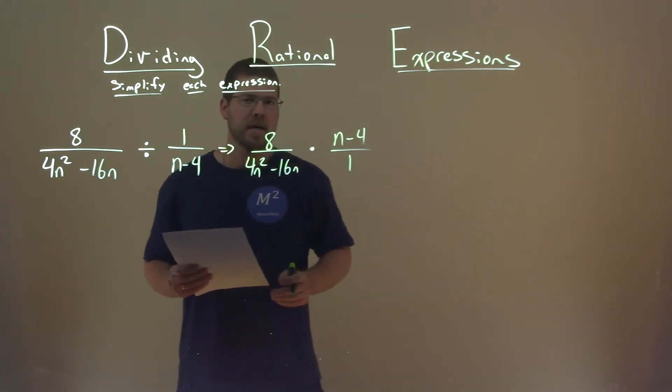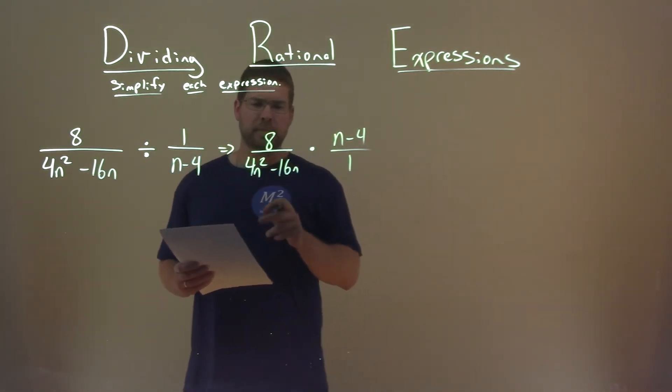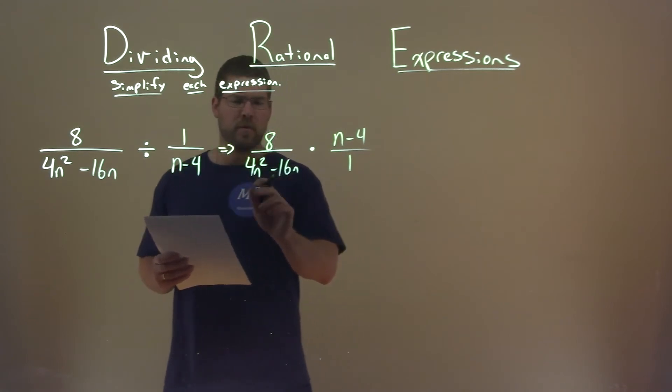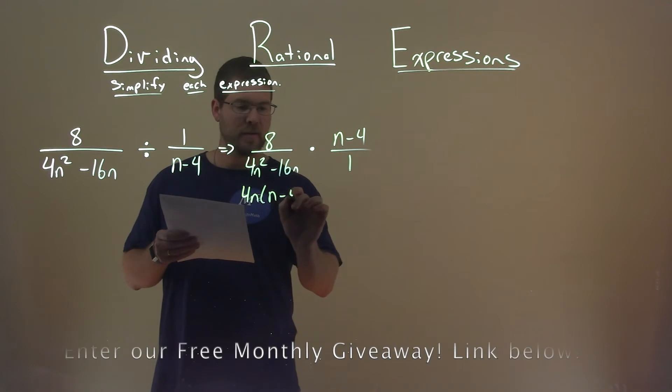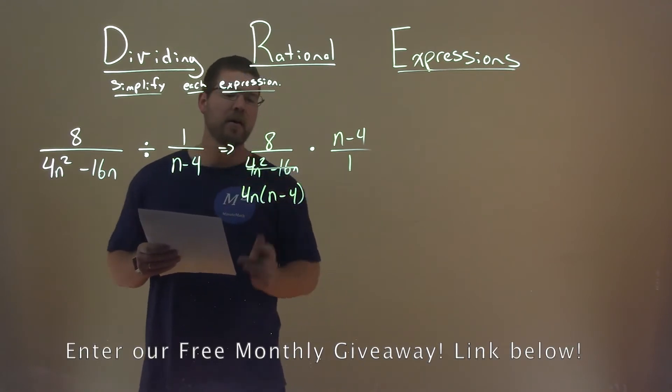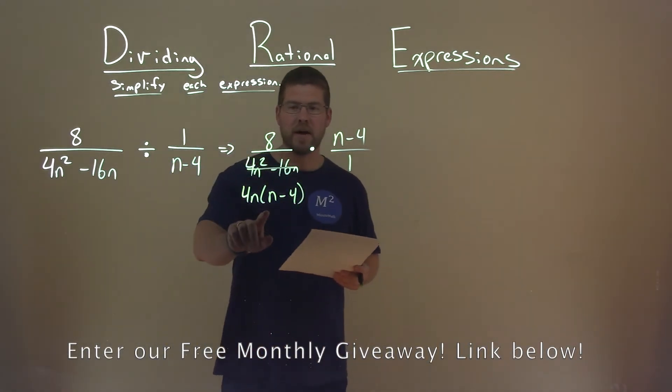Okay, now we want to factor where we can. I see a 4n is in both parts here, so if I pull out a 4n, I'm left with an n minus 4. So we replace 4n squared minus 16n with its factored form.